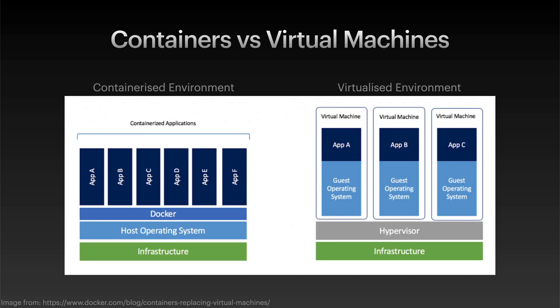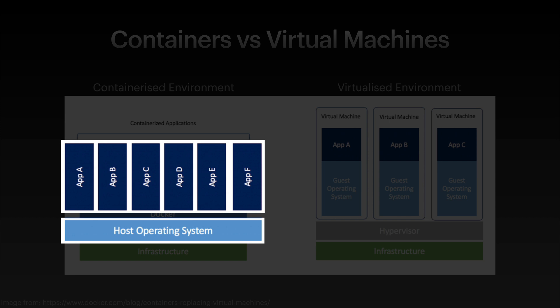Firstly, as we talked about in the last video, containers make very efficient use of the infrastructure they're running on. We saw some ballpark figures for the overhead of a container running that very basic Hello World web app. A lot of the efficiencies with containerization come from the number of kernels required when running multiple containers, which is just one — one kernel to host six apps in this case.